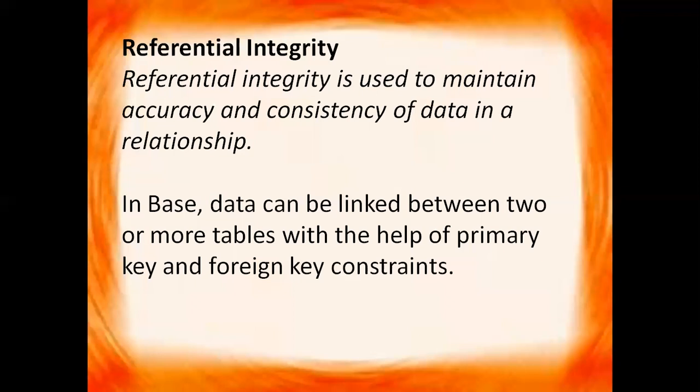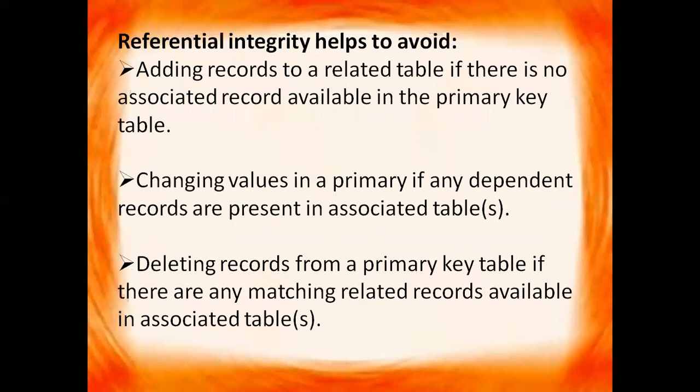We have established the relationship between these two tables, so now they are related to each other. The advantage of referential integrity is it avoids adding records to a related table if there is no associated record available in the primary key table. It means if you want to add a record in the foreign key table that is not present in the primary key table, it will not be allowed — only records present in the primary key can be added.